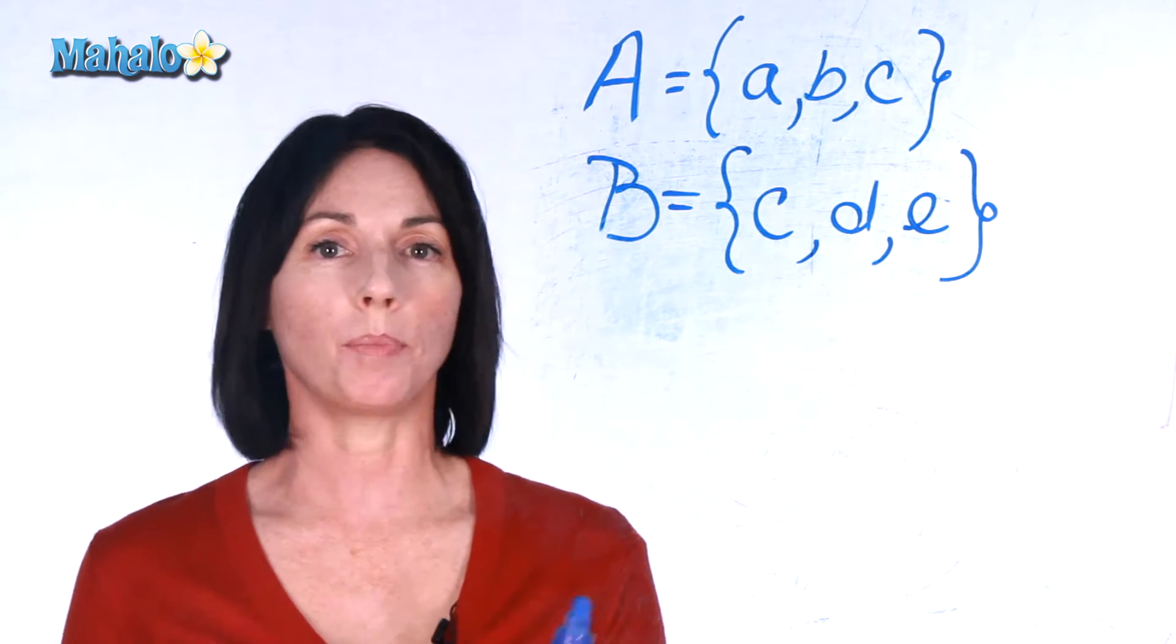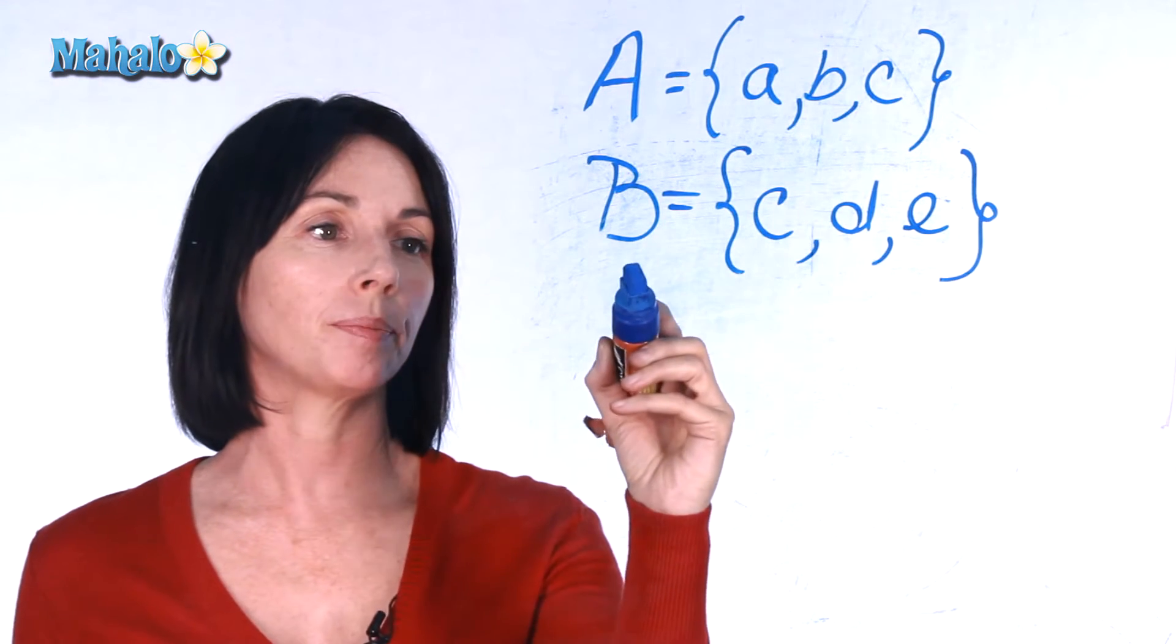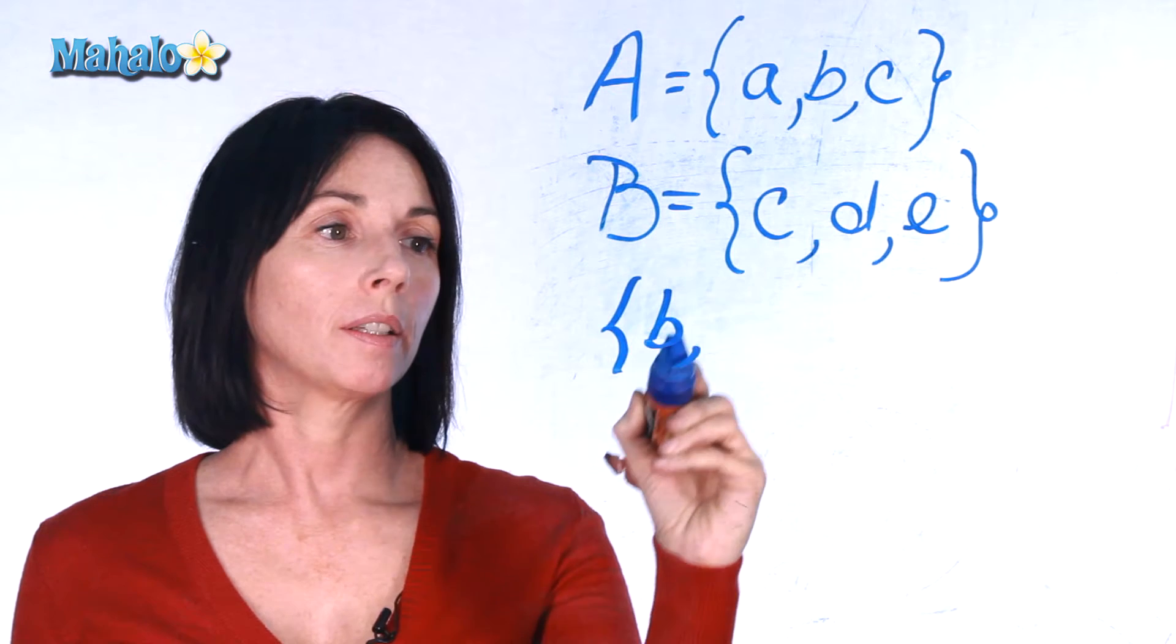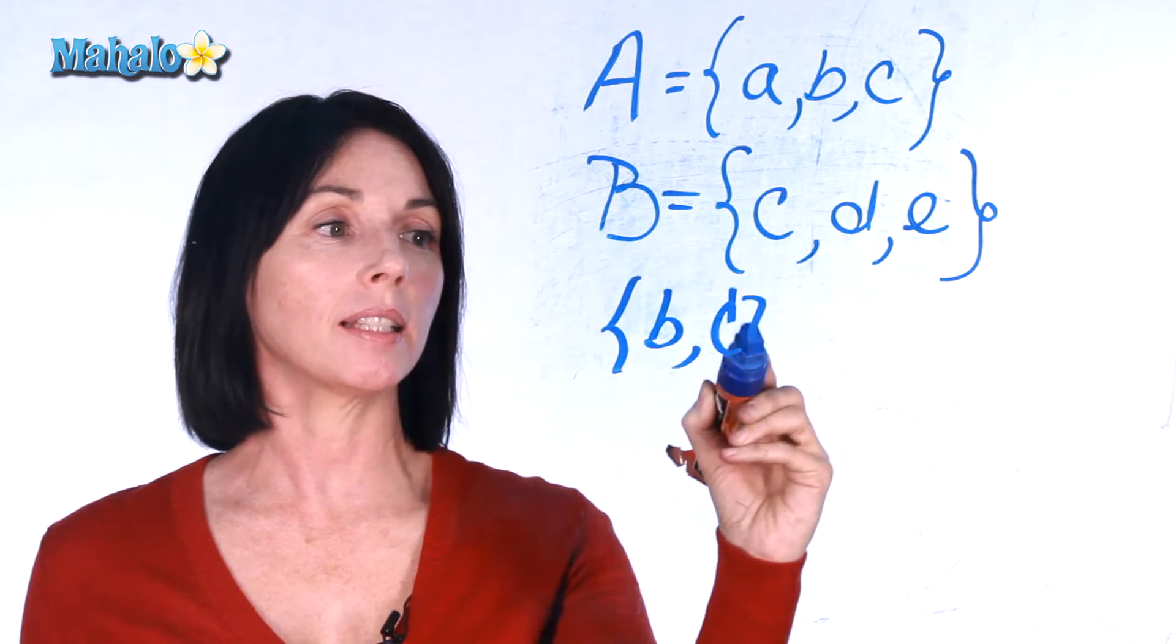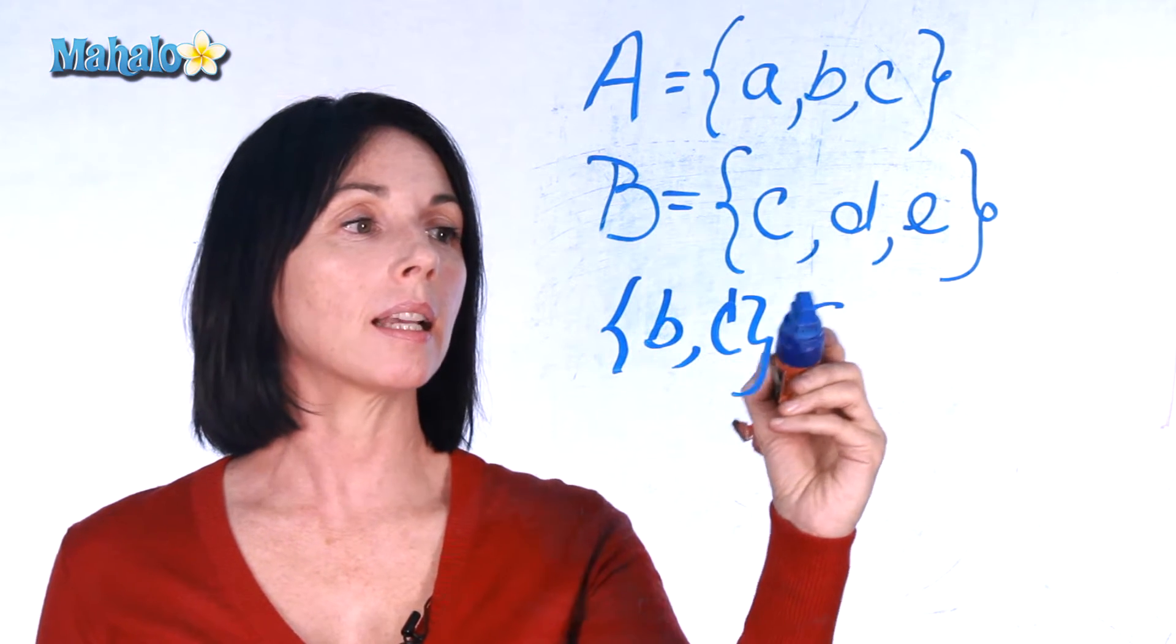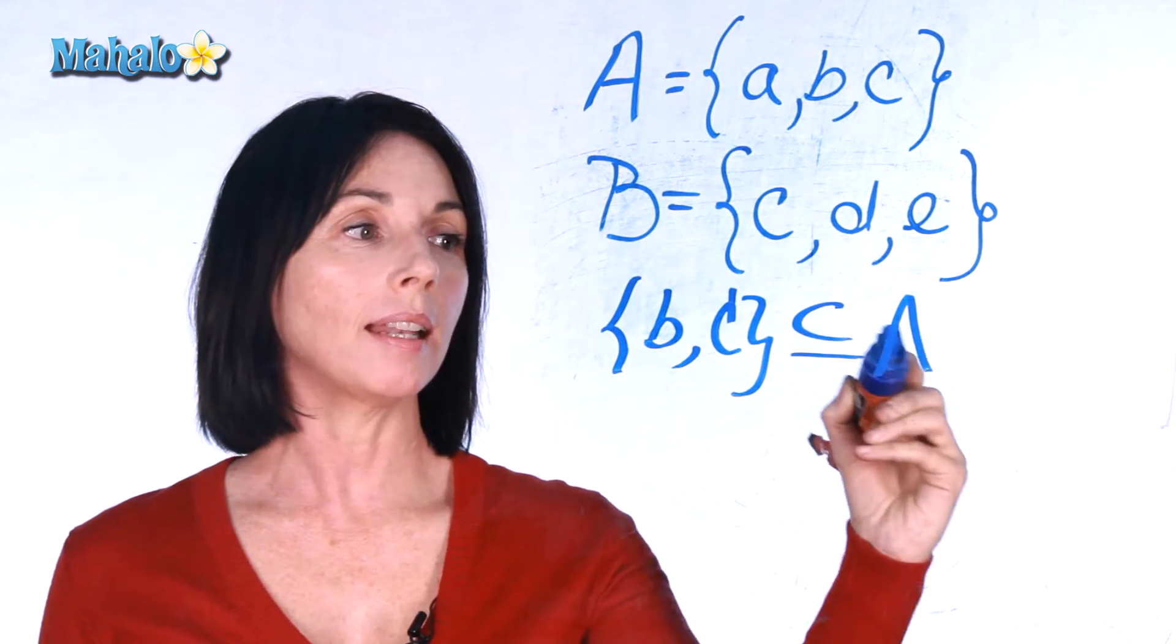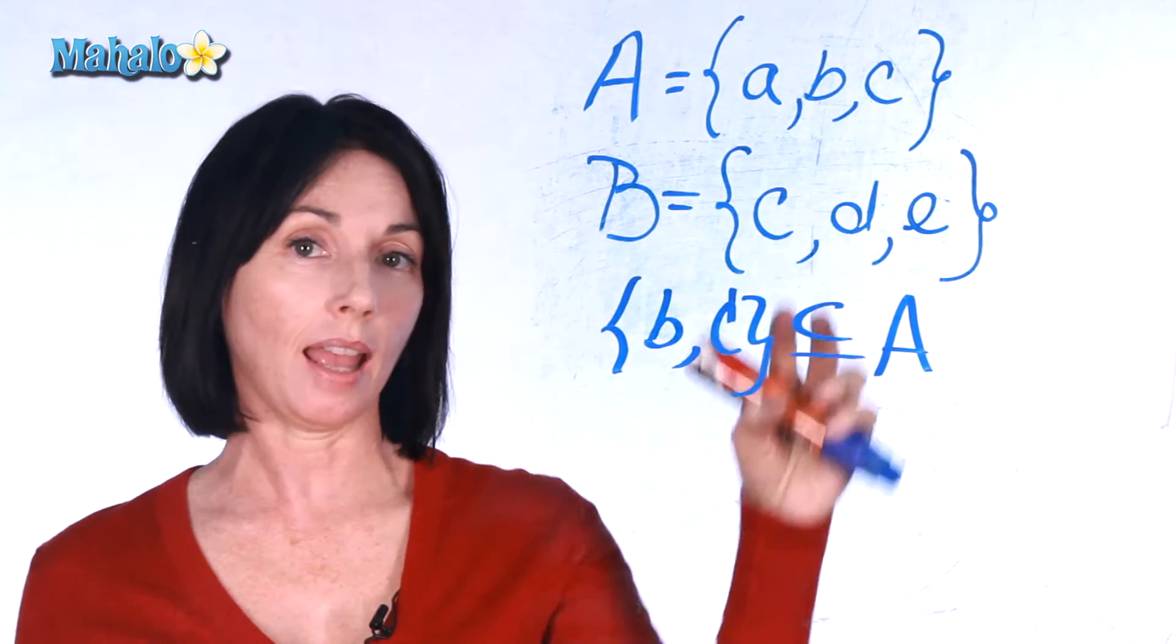Now what if I just take a couple of those elements like b and c. So the set that just contains b and c is a subset of the set A because b and c are in A.